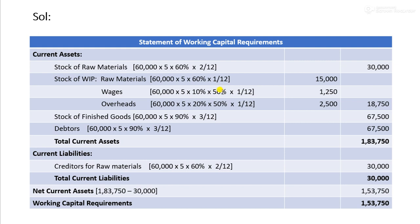For work-in-progress, wages and overheads are taken at 50% because the goods are semi-finished. Wages are 10% at 50%, that is 1 by 12. Overheads are 20% at 50%, that is 1 by 12, giving 2,500. Total work-in-progress is 18,750.